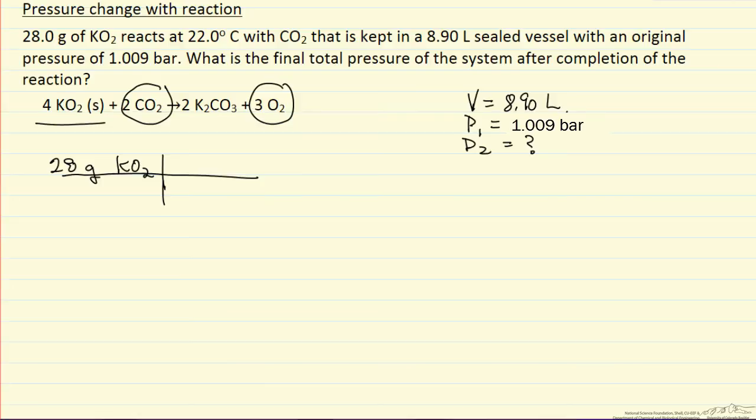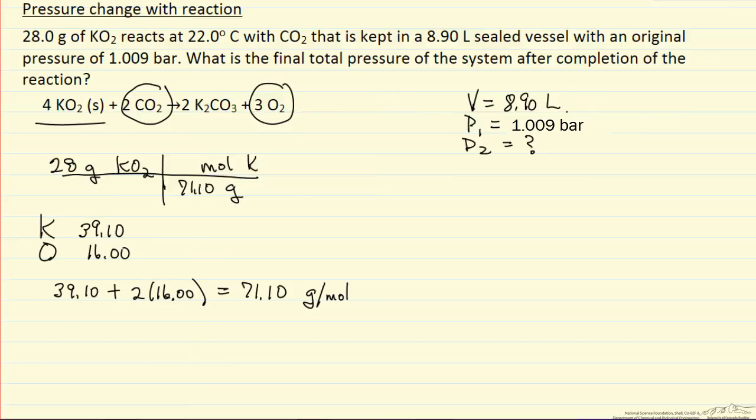Let's look up the values we need: the atomic weights of potassium and oxygen. Now we can get the molecular weight of KO2. It's 39.10 plus 2 times 16, so we have the molecular mass of our reactant: 71.10 grams per mole.